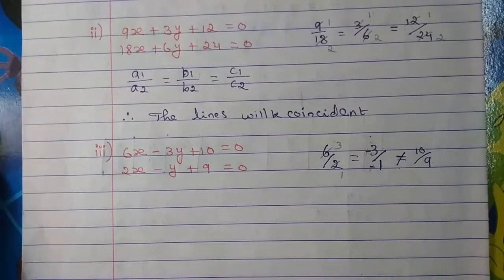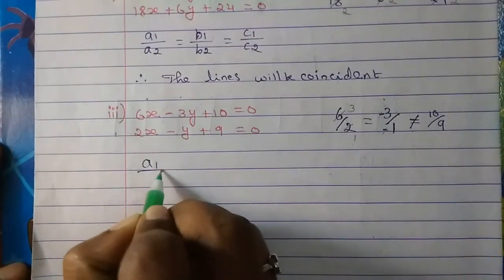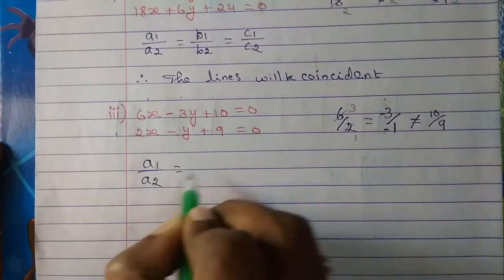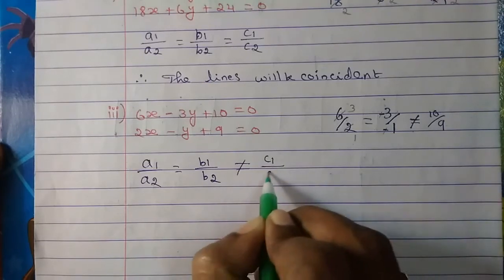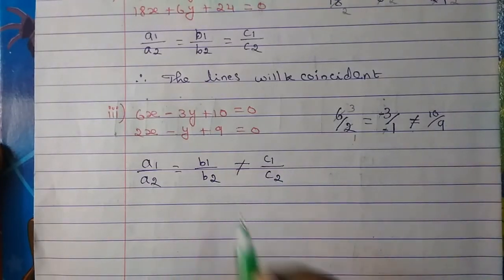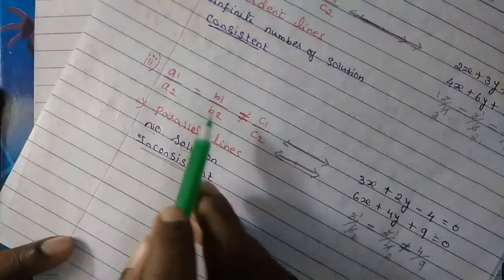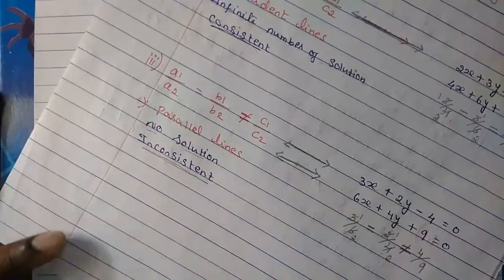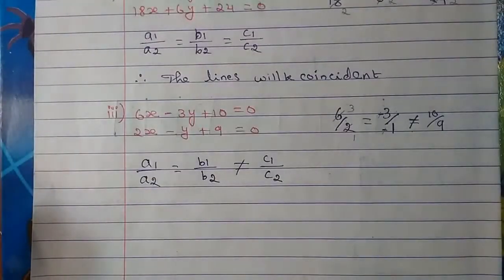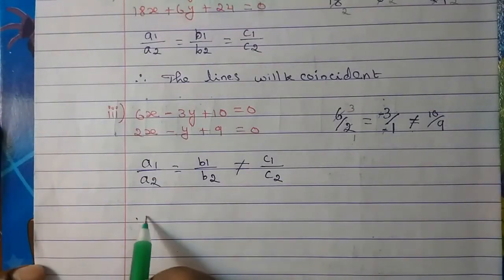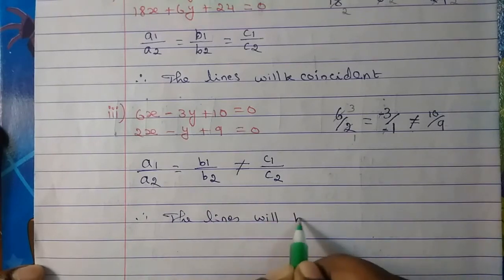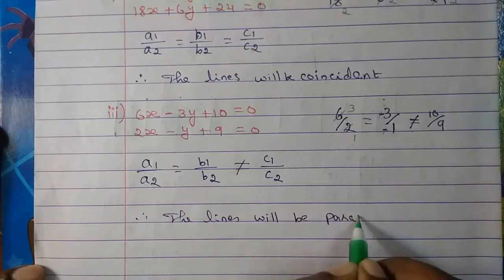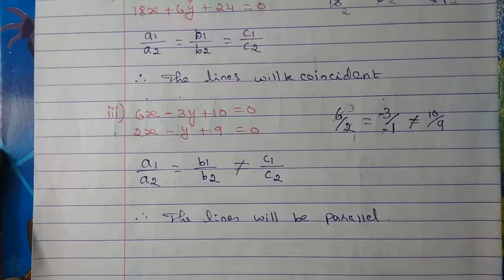So the condition here is: a1 upon a2 is equal to b1 upon b2, and not equal to c1 upon c2. In this condition, the lines will be parallel. So therefore the lines will be parallel. That's the answer.